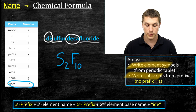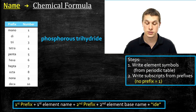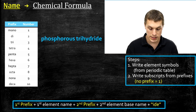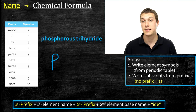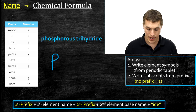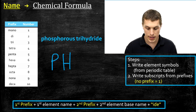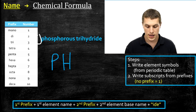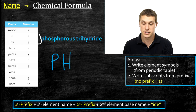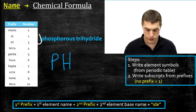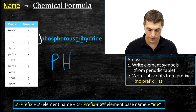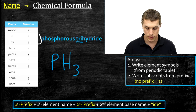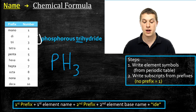Another example: phosphorus trihydride. Write the chemical symbols — phosphorus is P and hydride is hydrogen, H. There's no prefix before phosphorus, so there's just one of them. Tri before hydrogen means three hydrogens. So phosphorus trihydride is PH3.